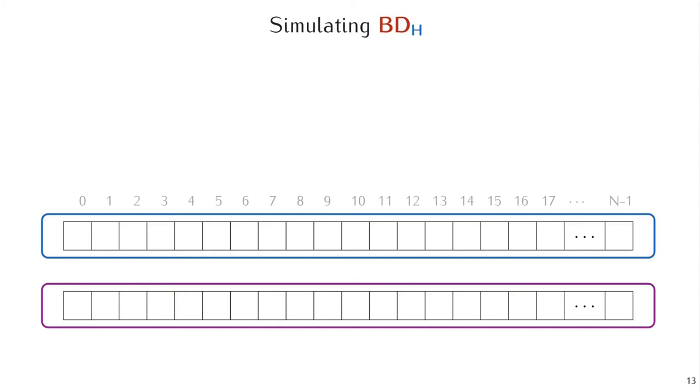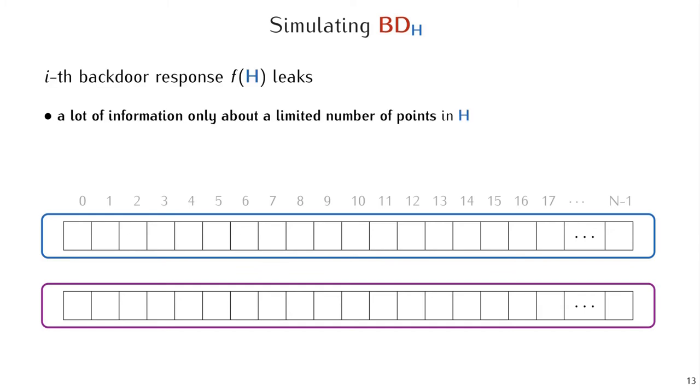Consider again the long list of assignments in each simulated hash function. We rely on a lemma which tells us that the backdoor response F(H) leaks a lot of information only about a limited number of points in H. This tells us that the mean entropy of a bunch of points drops by a lot, and the simulator has to fix, say, PI points, which we do for H, and then for G we XOR images of H with those of the random oracle RO.